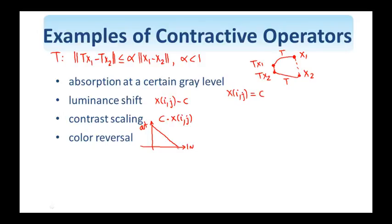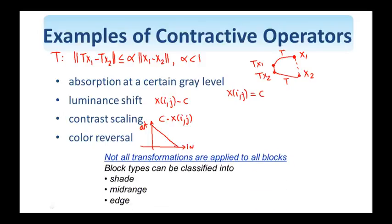Now, instead of trying all possible available transformations for each and every block, we can classify the blocks into, for example, three classes here. Shade blocks, mid-range, and edge blocks. And then, for each class, only make available the most appropriate operators out of all possible operators.